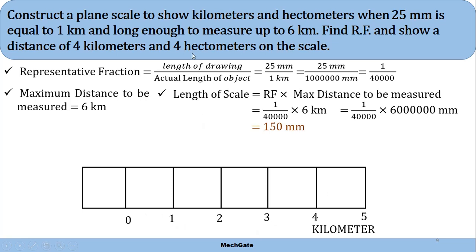If the maximum distance were 60 kilometers, we would write 10, 20, 30, 40, and 50. On the left-hand side of 0, the unit is hectometer. Since 1 kilometer equals 10 hectometers, the length of this division on the right-hand side represents 1 kilometer, and on the left-hand side represents 10 hectometers — they are equivalent. Now we have to divide this first division into 10 equal parts.